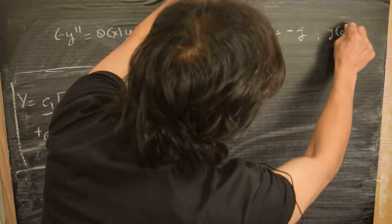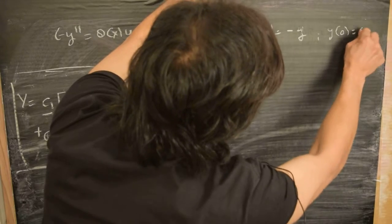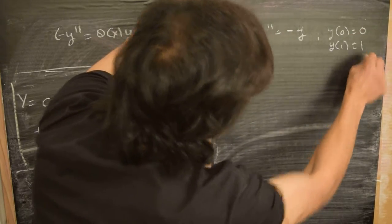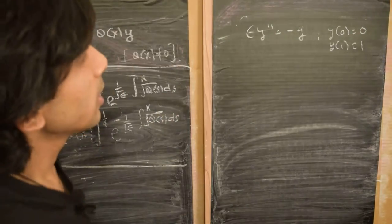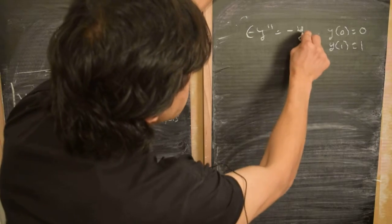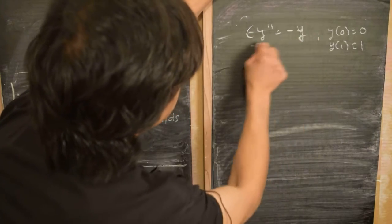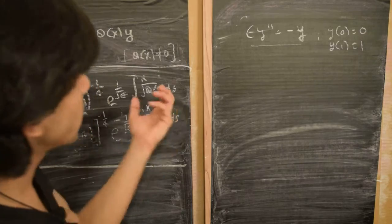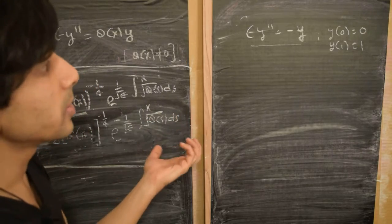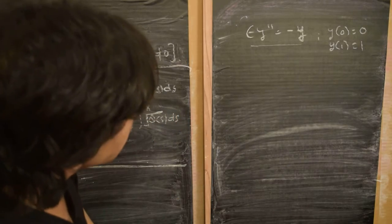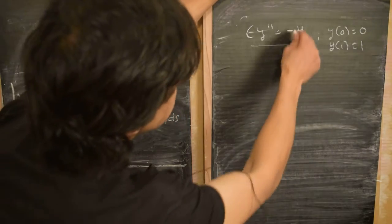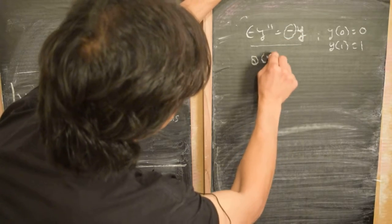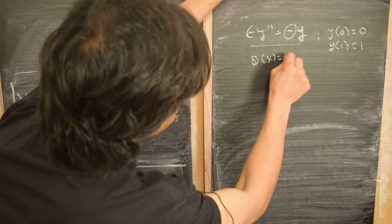Let's specify the boundary conditions as y(0) = 0 and y(1) = 1. This is a kind of equation we can solve exactly, so we can compare our WKB solution to the exact solution. Notice that q(x) is just a constant, which we've taken to be minus 1.